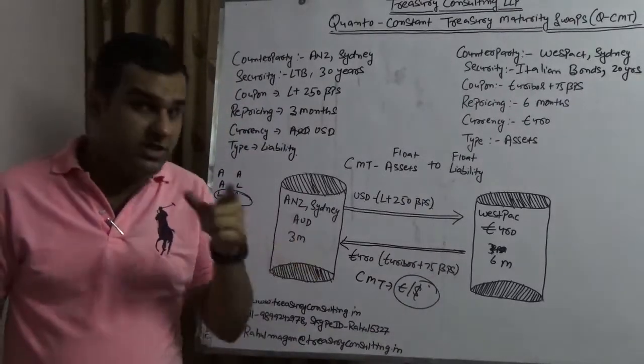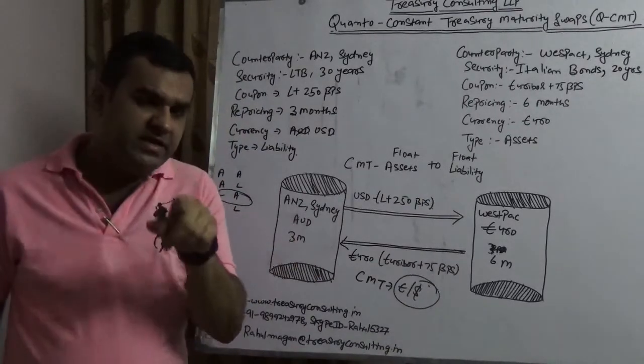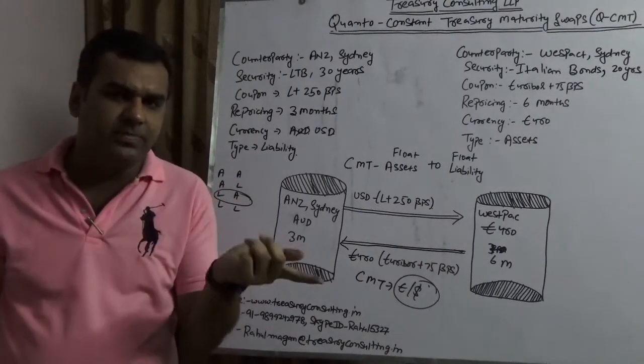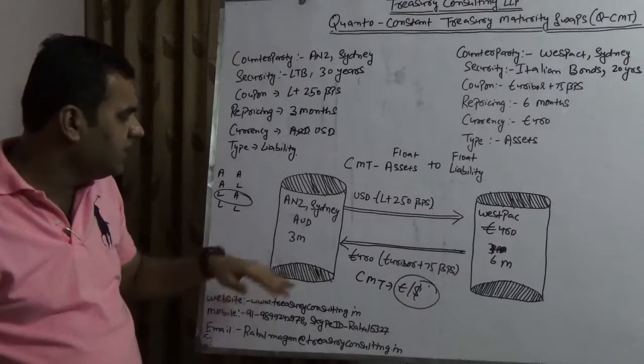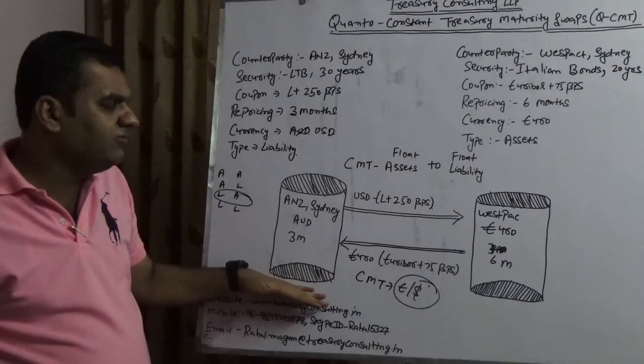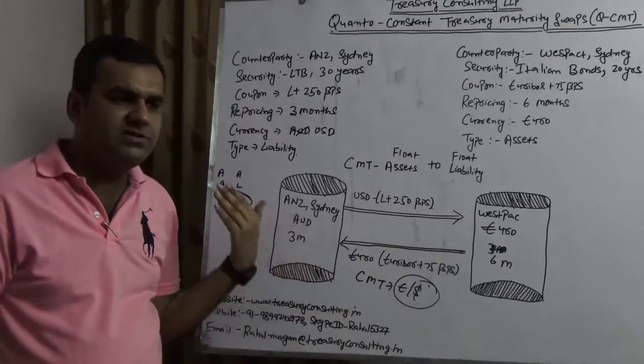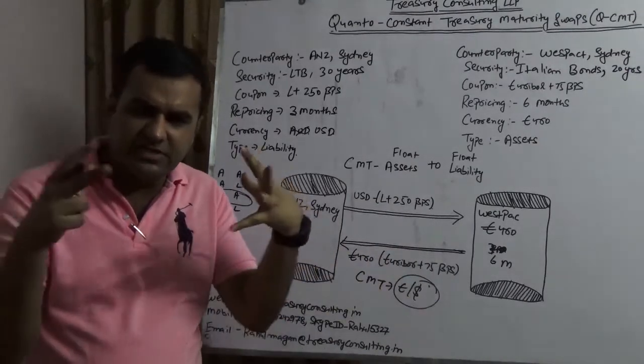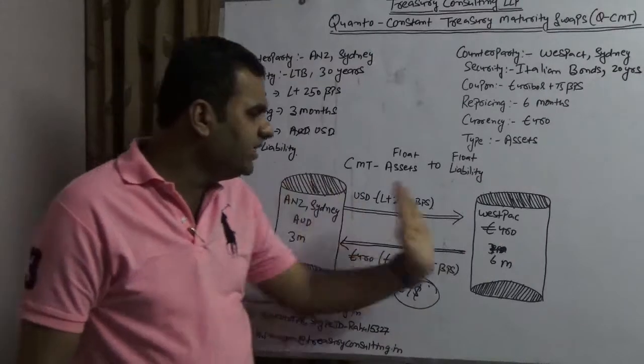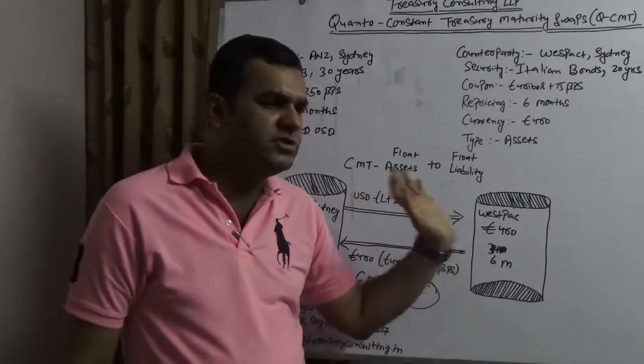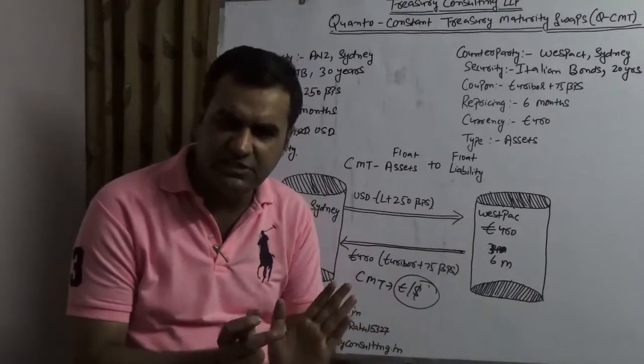That needs to be hedged, number one. If not hedged, then there should be a counterparty position, which means that there should be some liability of Euro in ANZ books. Because if I am getting a Euro income, I should have a Euro liability so that it's a natural offsetting. And here, they should have some dollar liability, so that if we are getting dollar income, there should be a dollar liability which can offset each other.